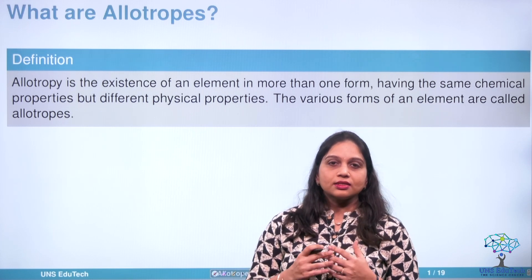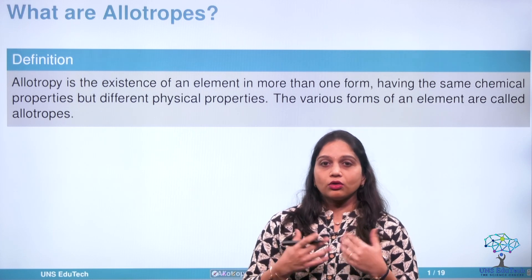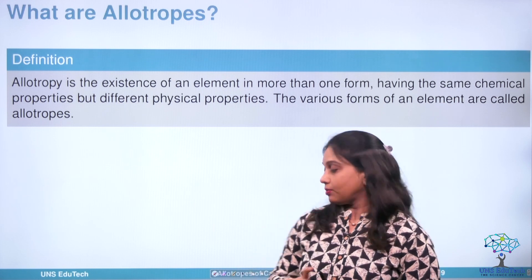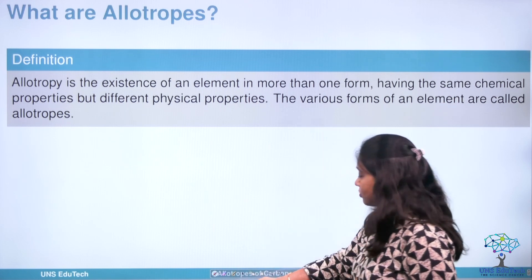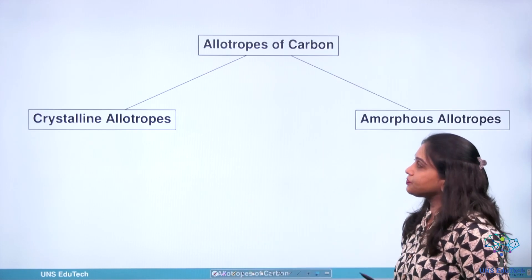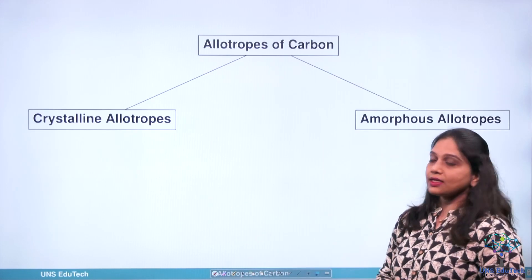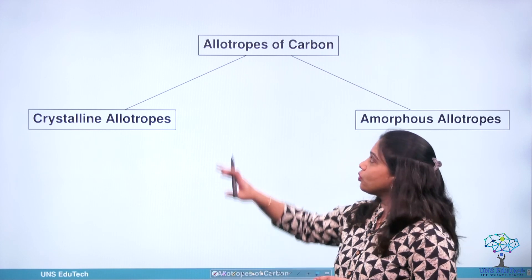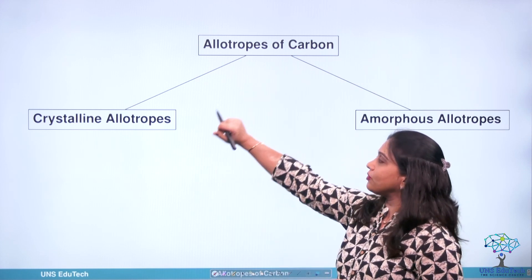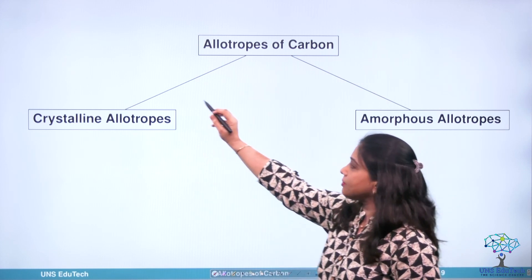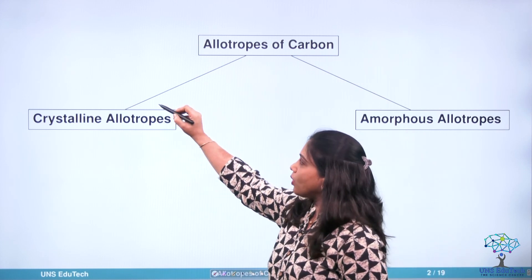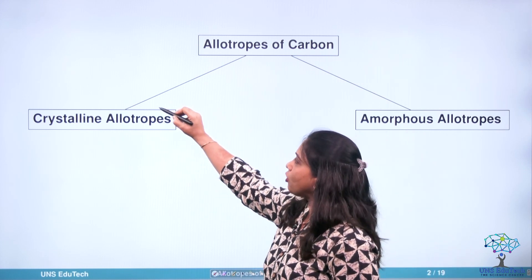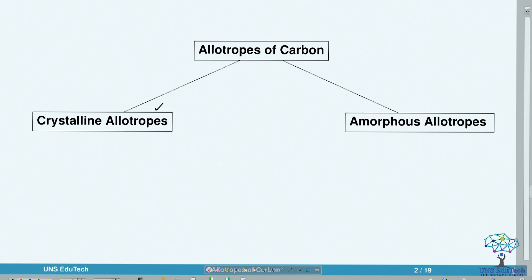Let us discuss the various allotropic forms of carbon. Basically there are two types of allotropic forms existing in carbon: one is the crystalline form and the other one is the amorphous form.